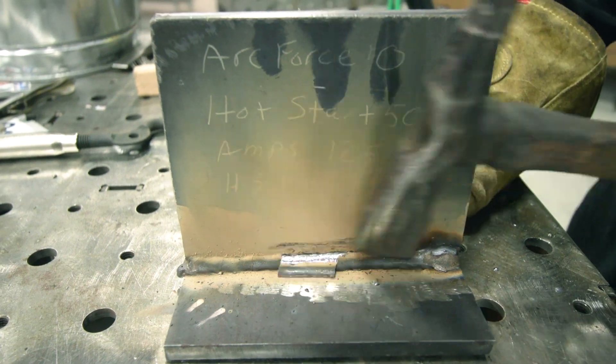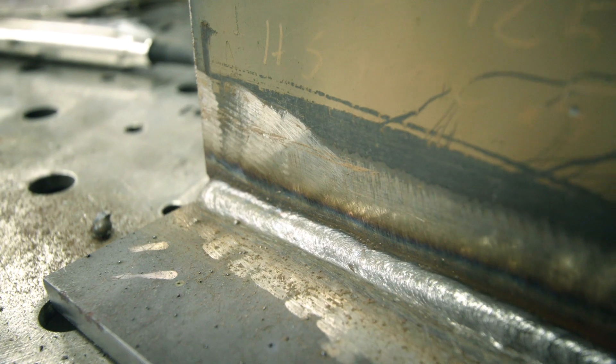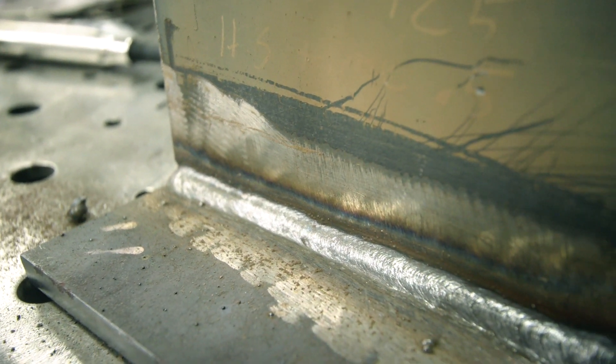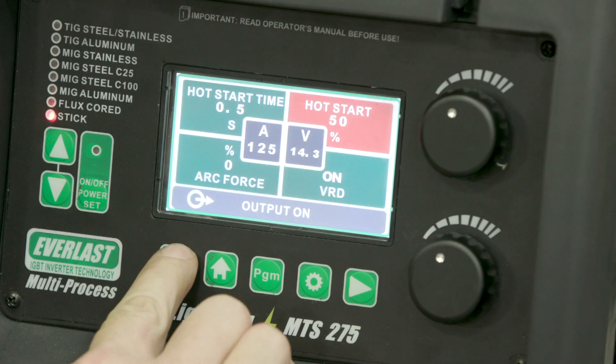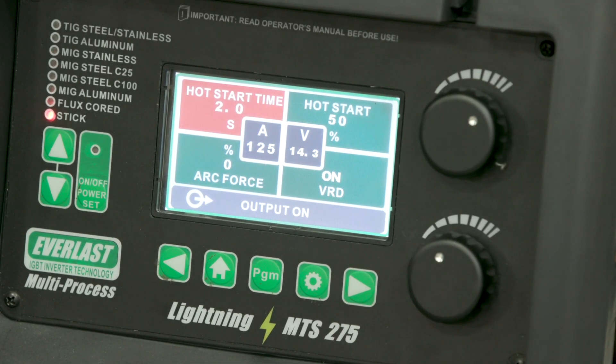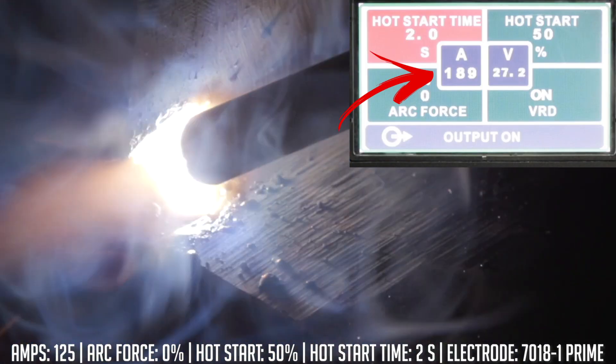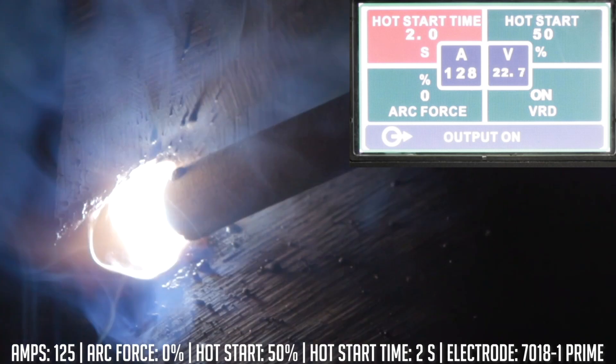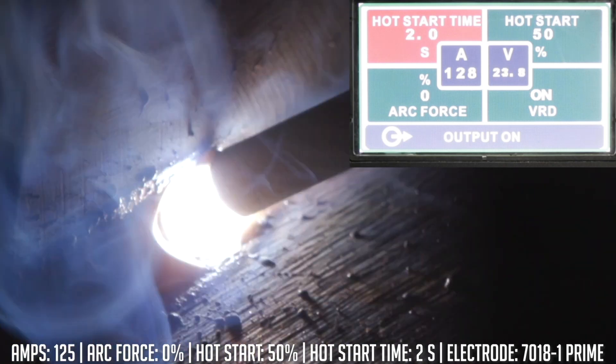That was 50% hot start with about half a second hot start time. I'm not sure if you guys were able to see that initially because half a second's pretty quick. We'll crank it up to the maximum, a two-second hot start. You'll be able to see exactly what happens when I initiate that arc and start that puddle. For the first two seconds the puddle is gonna be much wider and hotter, then it's just gonna taper off back down to that 125 amps we have preset.